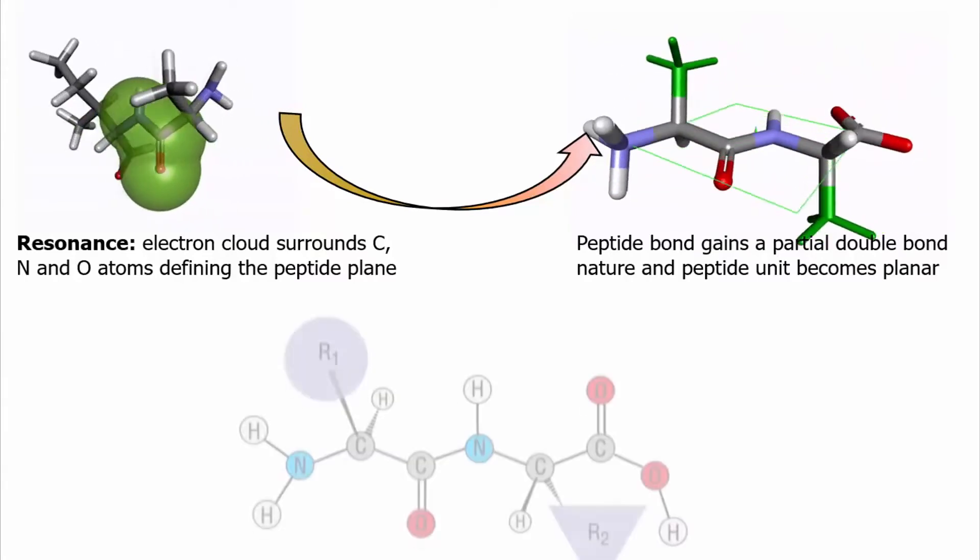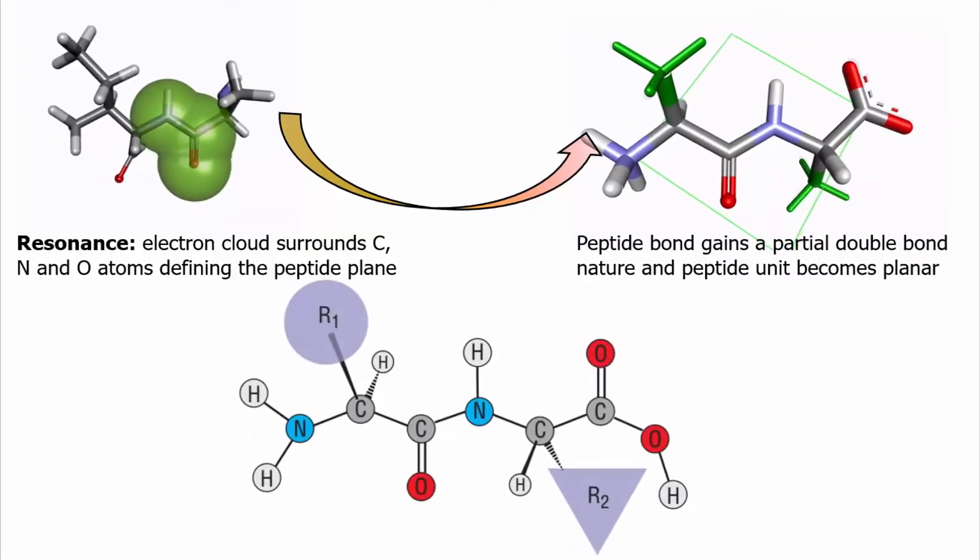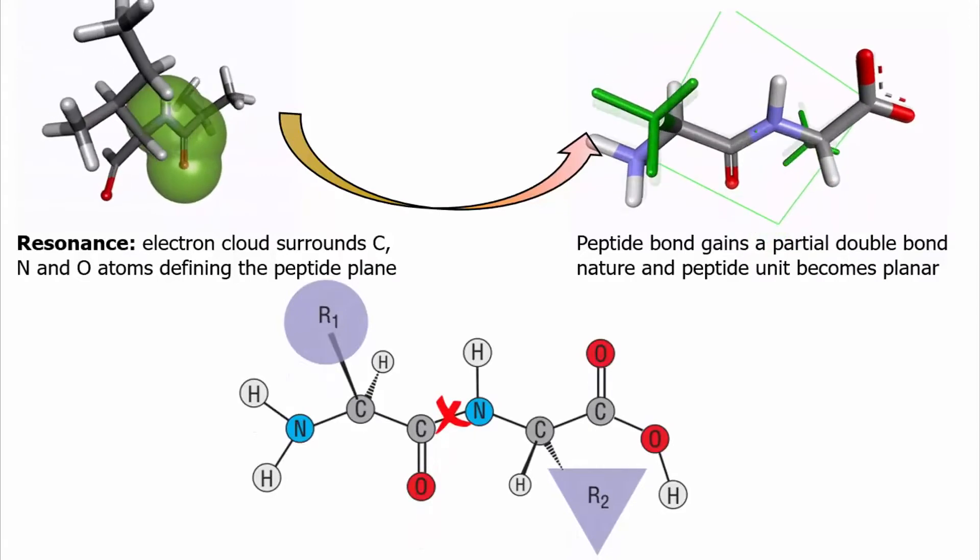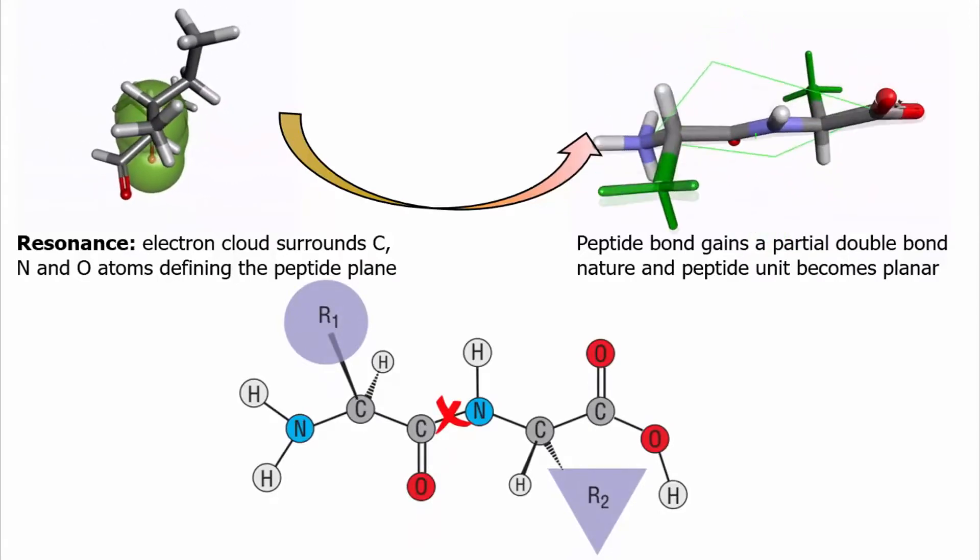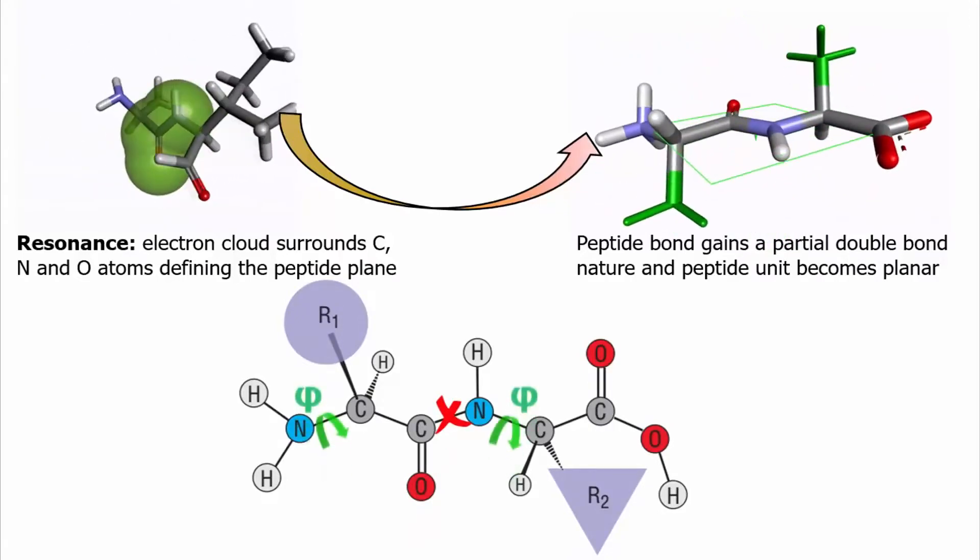Only two angles of polymerized amino acids can rotate. The angle between C-alpha atom and the amide nitrogen atom is one, that is called phi.